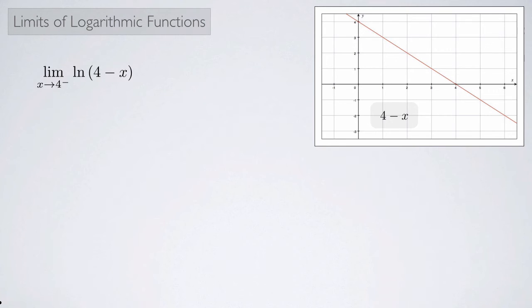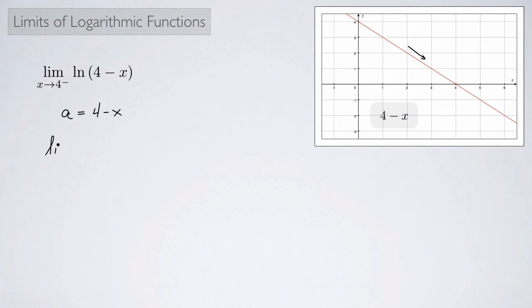Here's another example: the limit as x approaches 4 from the left of the natural log of 4 minus x. Here's a graph of 4 minus x. As we approach 4 from the left — coming from this direction — we see that 4 minus x seems to be approaching 0, and notice that we are dealing with positive numbers as we approach from the left. So let's let a equal 4 minus x as a change of variables. Then we can rewrite this in terms of a — as we approach 4 from the left, 4 minus x seems to be approaching 0 from the right.